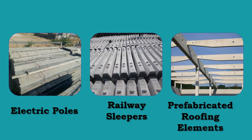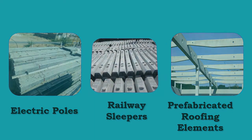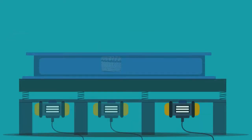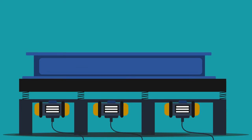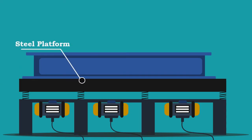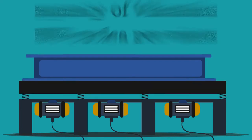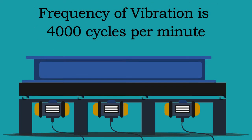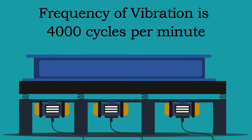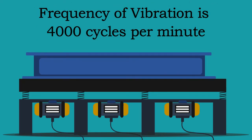Prefabricated roofing elements are also produced using this equipment. The large vibrating table consists of a rigid built steel platform mounted on flexible springs and driven by a number of electric motors. The average frequency of vibration caused by a table vibrator is 4,000 cycles per minute.